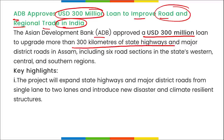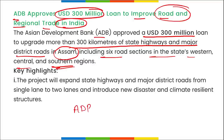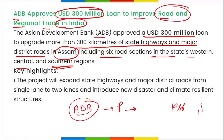The 300 million dollar ADB loan will upgrade more than 300 kilometers of state highways and major district roads in Assam, covering six road sections in the western, central, and southern regions. ADB's President is Masatsugu Asakawa; it was established in 1966, its headquarter is in the Philippines, and it has 68 members.